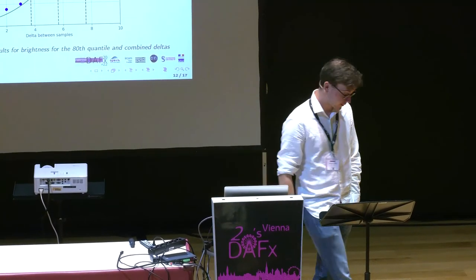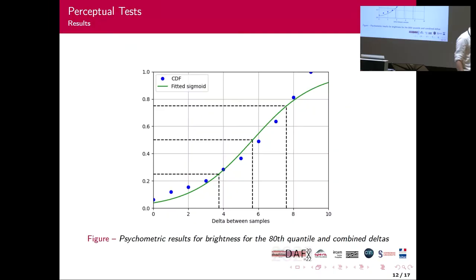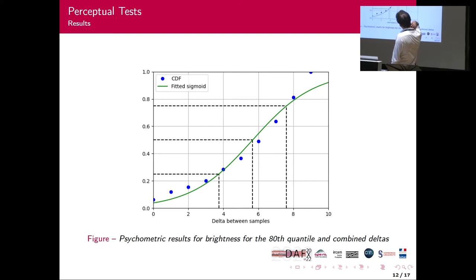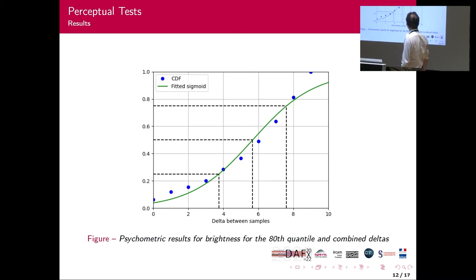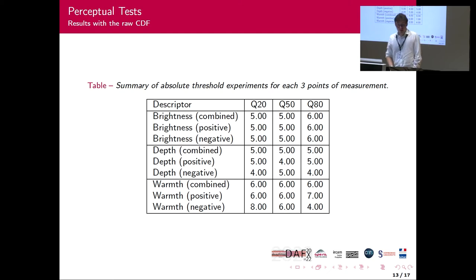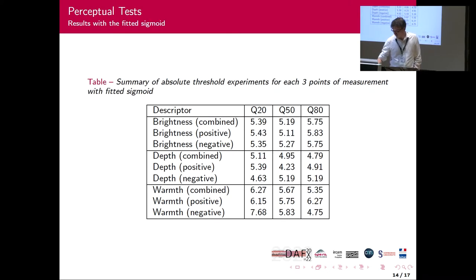This is what a cumulative probability distribution looks like. The blue points are the CDF, and we fitted a sigmoid on it to get more useful results. As we can see, the 50% threshold is over four — here it's somewhere around five. Once we gather everything, we can say that the absolute threshold is always higher than four units in terms of descriptors.